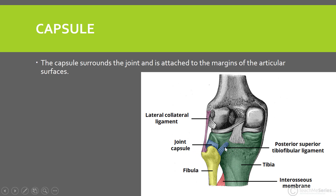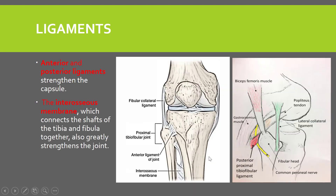The capsule surrounds the joint — see here the capsule surrounding the joint — and it is attached to the margins of the articular surfaces. There are some ligaments at the proximal tibio-fibular joint. First of all, the anterior and the posterior ligaments. The anterior ligament strengthens the capsule, and similarly the posterior proximal tibio-fibular ligament also strengthens the capsule.